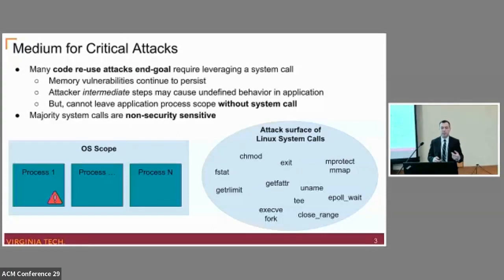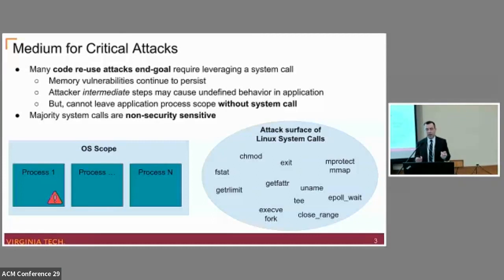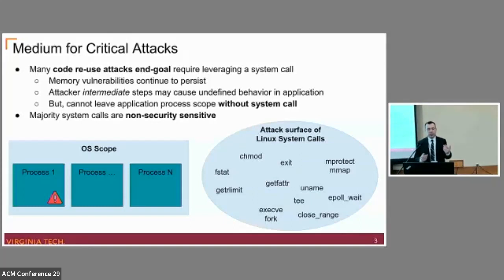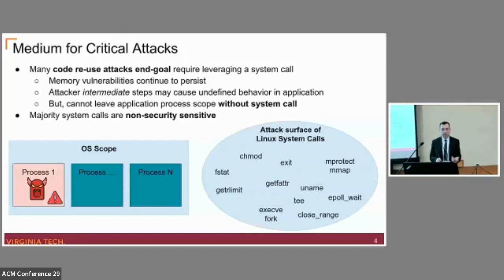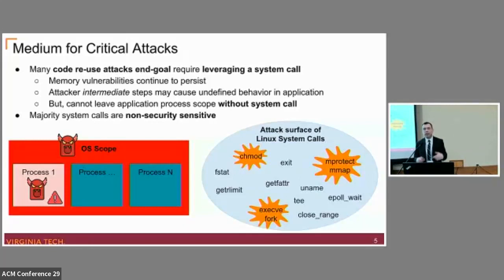To give a little more background on code reuse attacks: they're exactly what they sound like — reusing chunks of code to come up with an attack and eventually execute a system call. This is possible because memory vulnerabilities continue to exist in modern-day code bases. With a memory vulnerability, the attacker can set up their attack, and with a system call, the attacker can essentially leave the scope of the process and take over the underlying system.